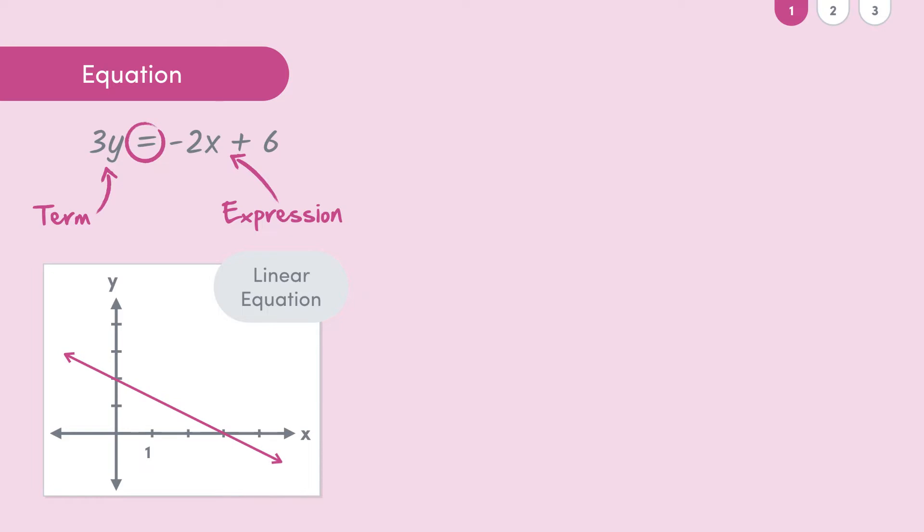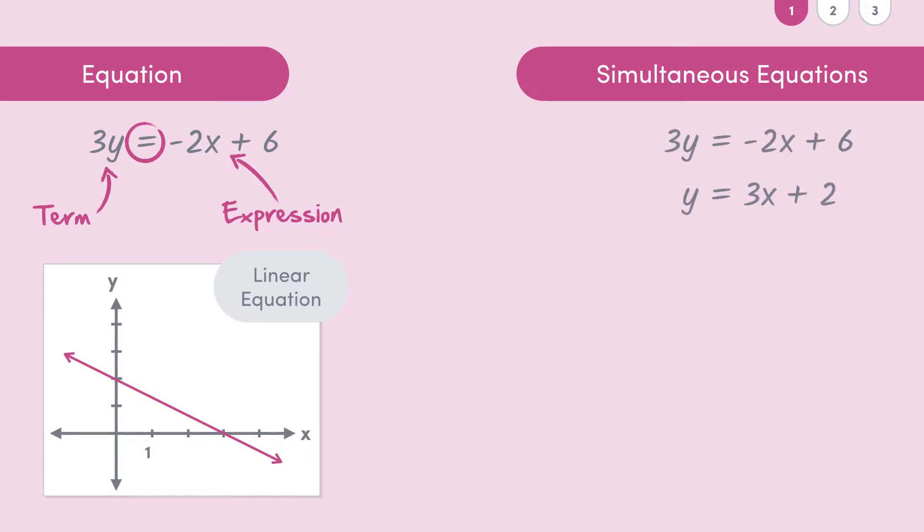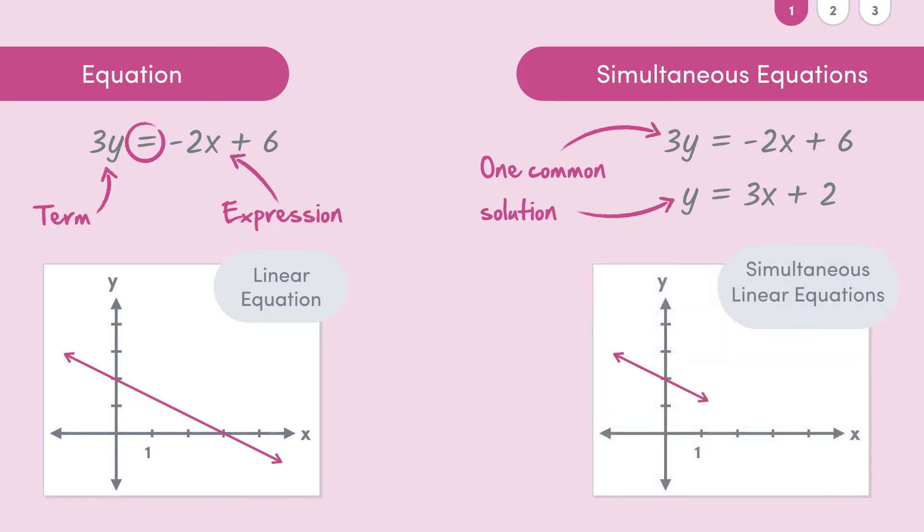So basically, simultaneous linear equations are two different equations which have one solution that is the same for both of these equations. What this means graphically is that the lines of our equations will intersect at one point giving us a common solution, but we'll get into that later.